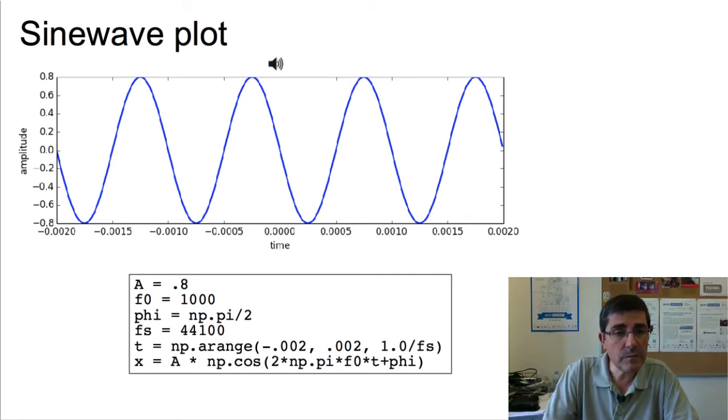So this is a very simplified code for this sine wave, in which we see the amplitude, which was 0.8, the frequency, which is a thousand hertz, so the frequency we heard is a thousand hertz. Then there is an initial phi, which is the initial phase at time 0, which time 0 is right in the middle.